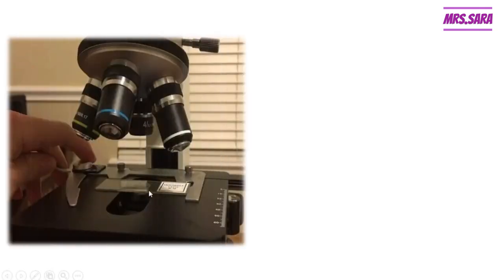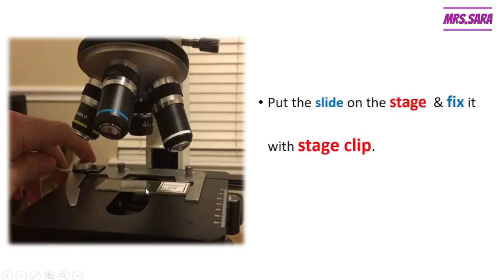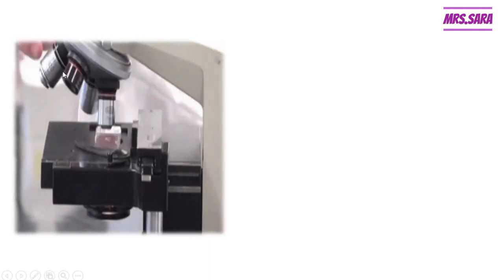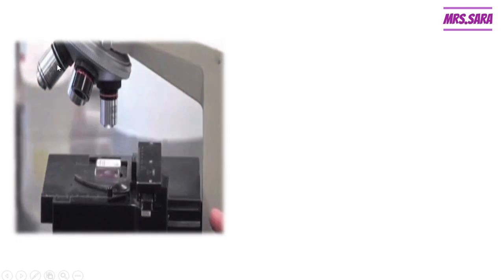To use the microscope, Primary Six, put the slide on the stage — this black part is called the stage. Then fix it with the stage clip to prevent the slide from moving. After fixing the slide, choose the suitable objective lens.